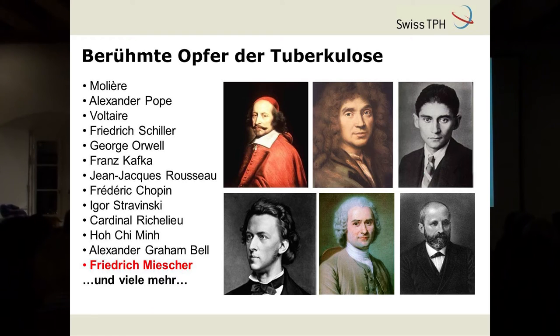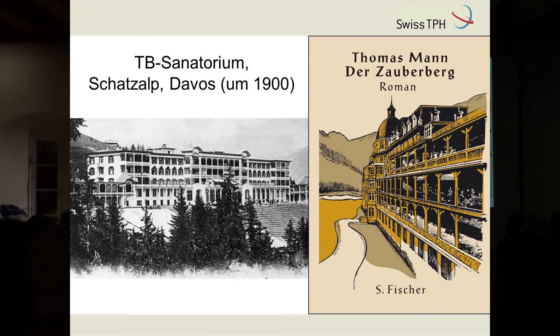Unter diesen Todesfällen fallen auch sehr viele Berühmtheiten. Hier ist eine relativ kleine Liste – es gibt sehr viele mehr. Wir haben Molière, Franz Kafka, Igor Strawinsky. Aber auch der berühmte Basler Forscher Friedrich Miescher ist 1895 in Davos an der Tuberkulose verstorben, in einem dieser berühmten TB-Sanatorien, die zu der Zeit sehr verbreitet waren in den Schweizer Alpen. Vielleicht das bekannteste TB-Sanatorium ist Schatzalp, das dann auch von Thomas Manns Zauberberg bekannt gemacht wurde.